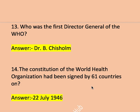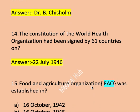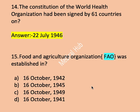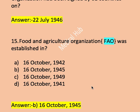Next question, question number fifteen: Food and Agriculture Organization or FAO was established in — option A 16 October 1942, B 16 October 1945, C 16 October 1949, D 16 October 1941. Right answer is B, 16 October 1945. FAO was established on 16 October 1945.